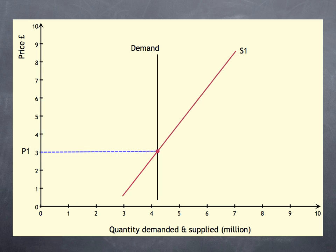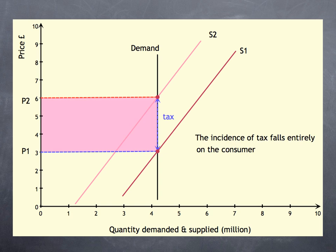Now, what if demand is perfectly inelastic? The tax moves supply upwards. The price goes up the whole £3. And the incidence of tax falls entirely on the consumer.